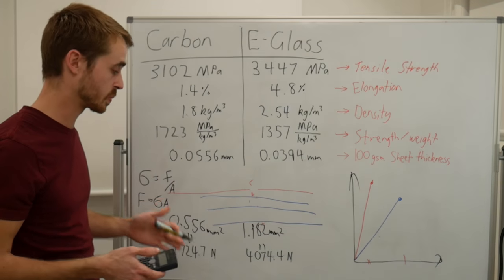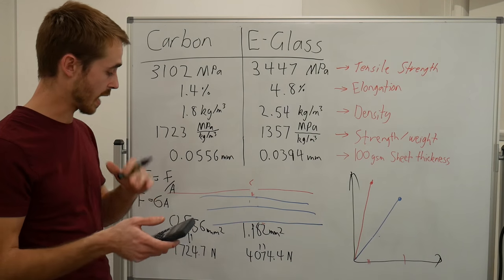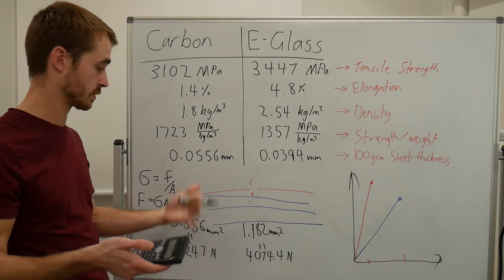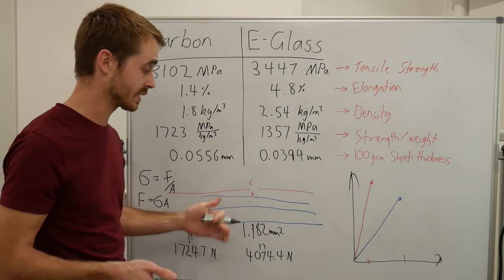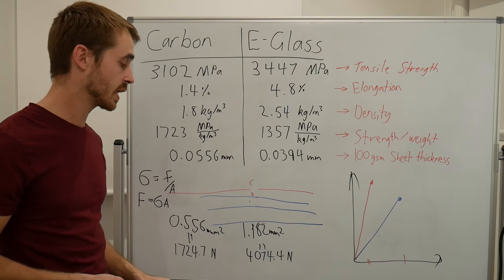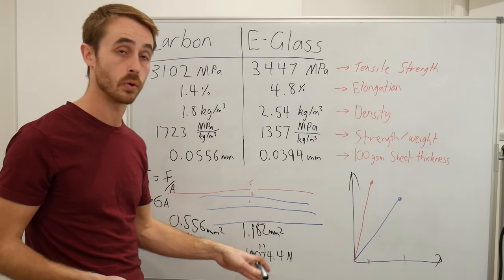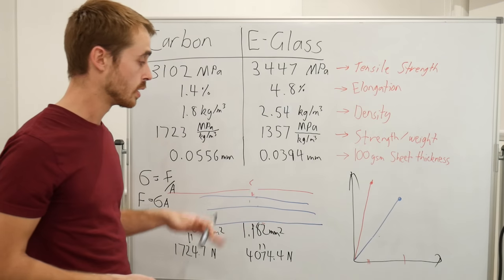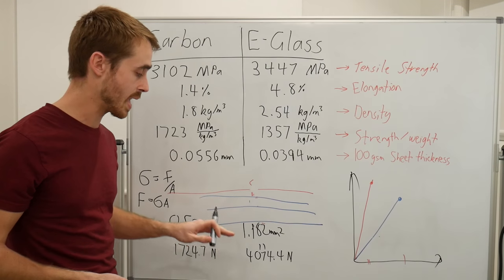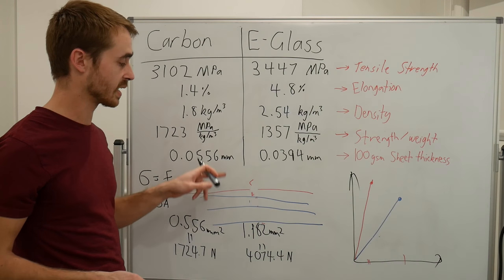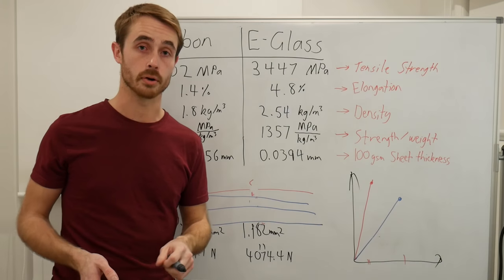Most people will be like, oh yeah those are the strengths, add them together, that means we get about 6,000 newtons of strength. But as I explained before, you add these two together and you actually still just end up with 4,000 newtons of strength before it breaks - that's about 400 kilos of tensile load. So adding that carbon hasn't done anything for your strength, all it's done is just add more weight onto your part.